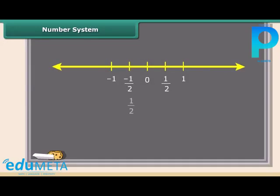Students, what about 1 by 2? Is it a whole number, natural number or an integer? You can see 1 by 2 lies between 0 and 1. We call it a rational number. Come along to know more.